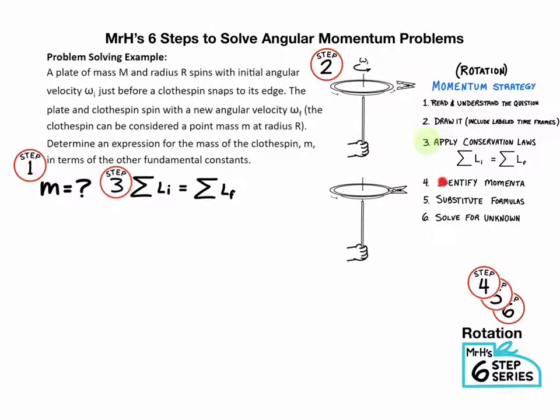Step four, identify things that have angular momentum. In the initial moment, we had just the disk spinning, so we're going to write I omega for just the disk. And then the final situation, both of them are spinning together. So you can choose to write two different terms independently, or you can combine them. I chose to put them together as IF and omega F.